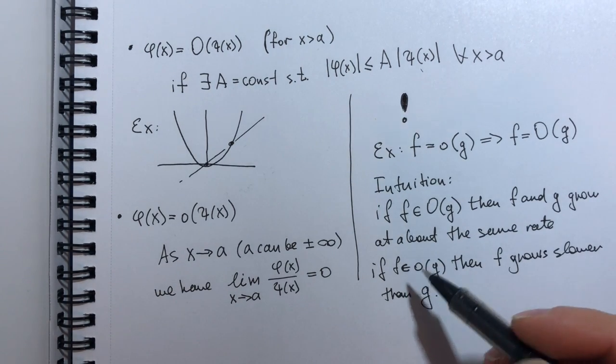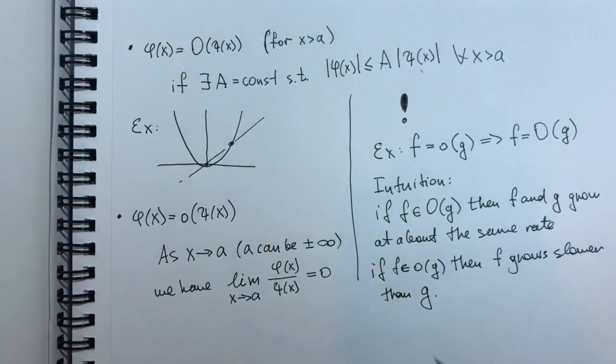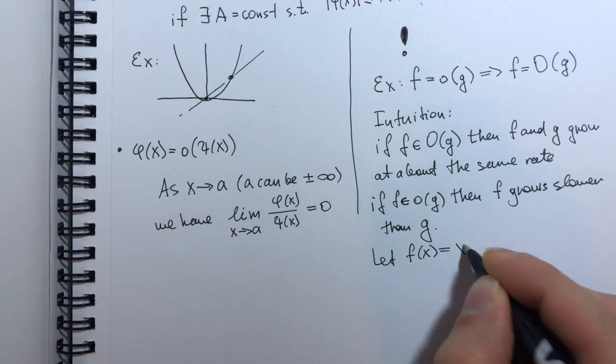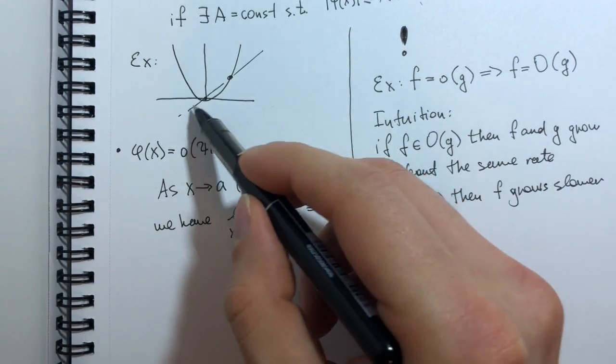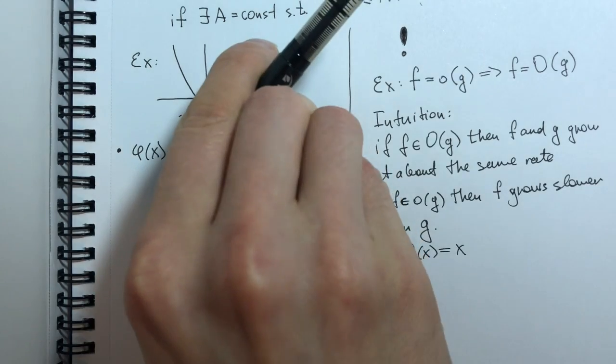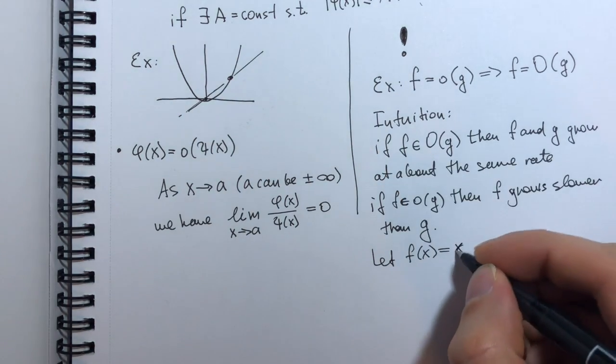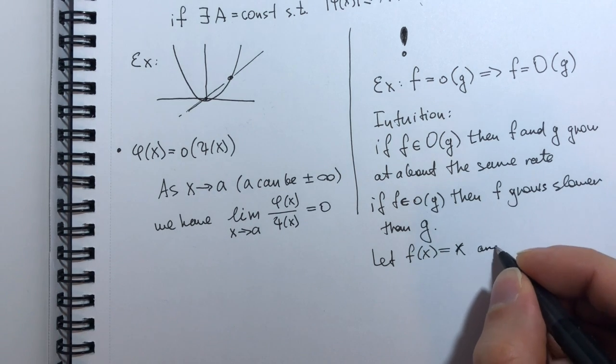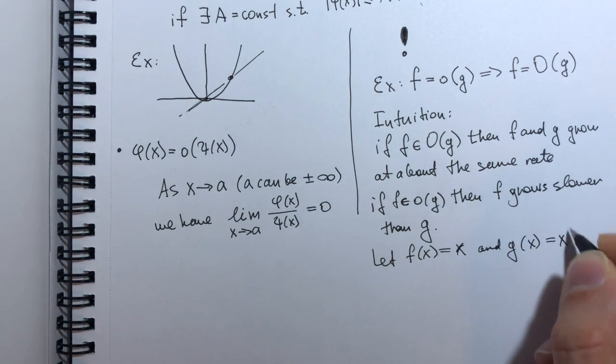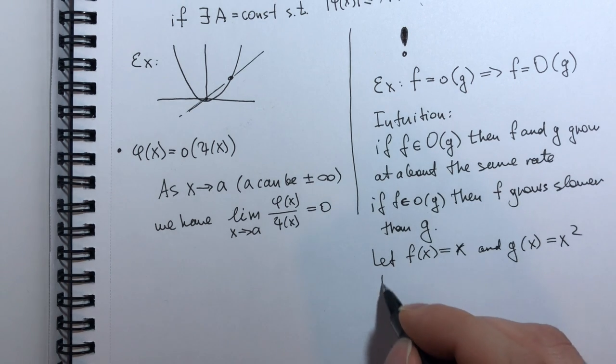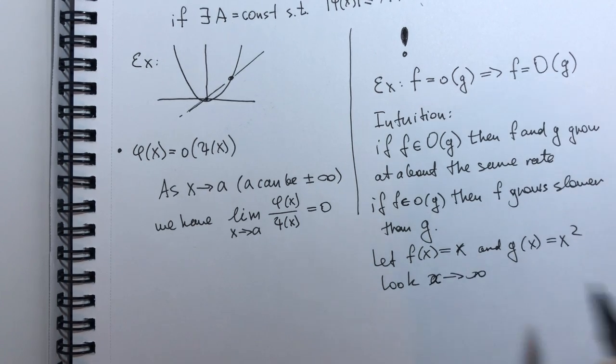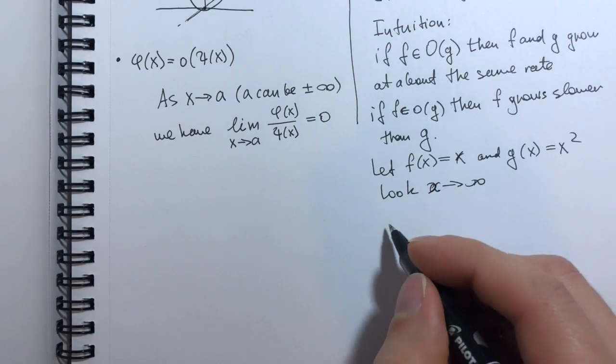Now to demonstrate this, we can actually use the same example. So let F of x be x, that will be a straight line at a 45 degree angle to the axes, and G of x be our parabola. And we'll be interested in a limit of x going to infinity.